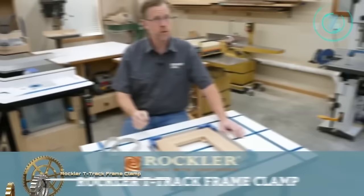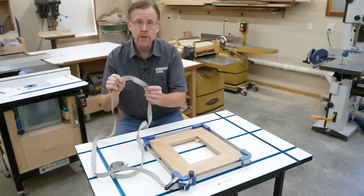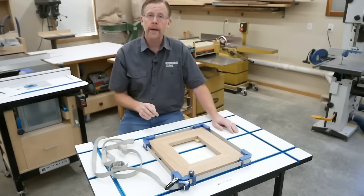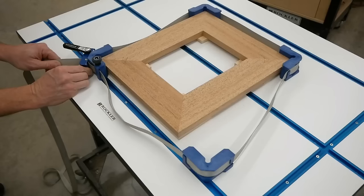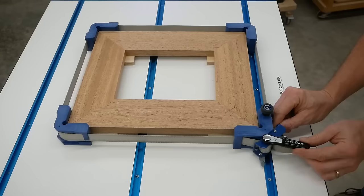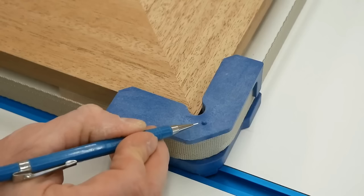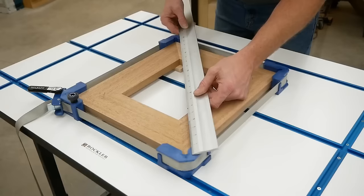The Rockler T-Track frame clamp is a versatile and user-friendly tool designed for clamping frames during glue-up. Its ratcheting band clamp head securely tightens against a T-Track, while two 90-degree corner brackets maintain miter alignment and prevent strap slippage. To utilize this clamp, position your frame within the T-Track, align the corner brackets with the miters, and tighten the ratcheting band clamp head until the miters are firmly joined. After applying glue and allowing it to dry, release the clamp and remove the frame from the T-Track. This clamp ensures square and aligned frames, making it suitable for both novice and experienced woodworkers.